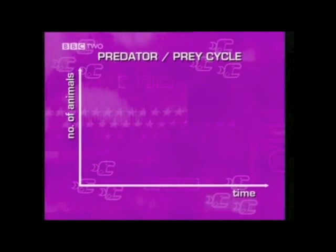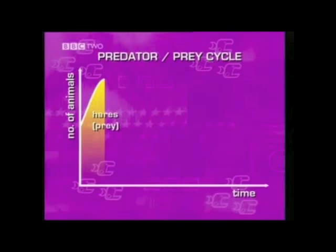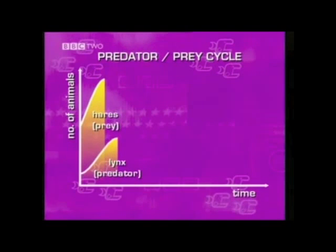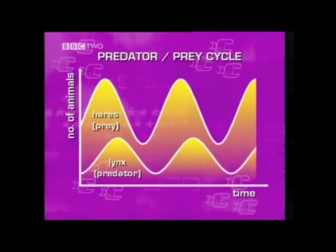Predators themselves are affected by these things, particularly their own food supply — their prey. This is a classic example of a predator-prey cycle. If the hare population increases, this supplies more food for the lynx, the predator, causing an increase in the lynx population. However, more lynx results in fewer hares, which in time results in fewer lynx again. These fluctuating population sizes are typical of lots of predator-prey relationships.